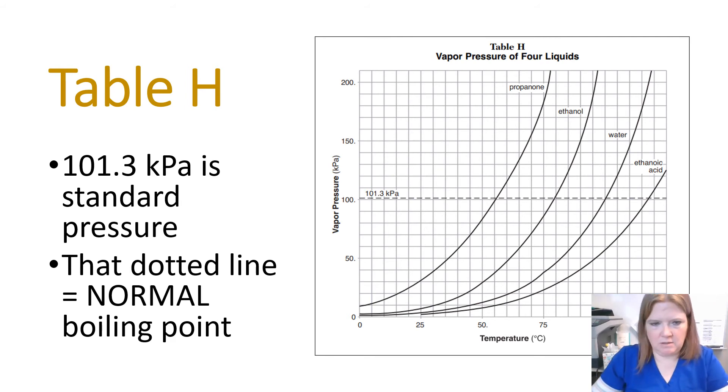So to find the normal boiling point for propanone, I look where propanone crossed this line. To find the normal boiling point for ethanol, I find where ethanol crossed this dotted line. To find the normal boiling point for water, I'd find where water crossed that line.